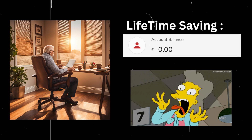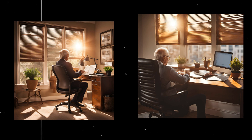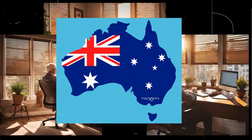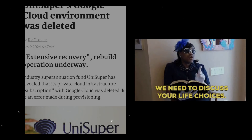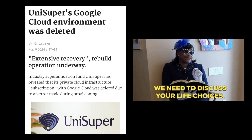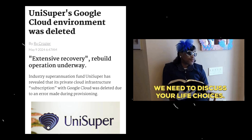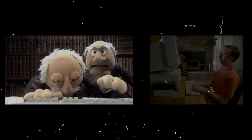Imagine logging into your retirement account and finding nothing. This shocking scenario became a reality for over half a million Australians due to a massive Google Cloud screw-up. The incident we're discussing today is the UniSuper outage, which serves as a stark wake-up call about entrusting our finances to cloud-based systems.